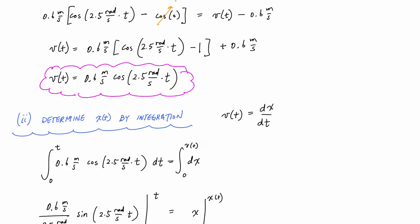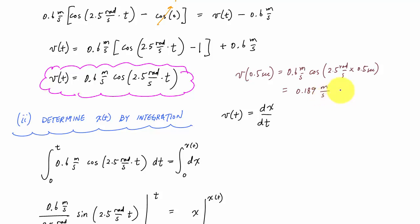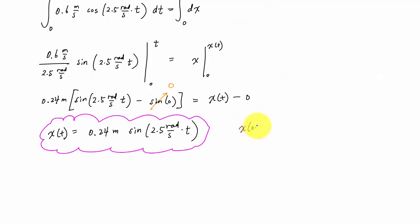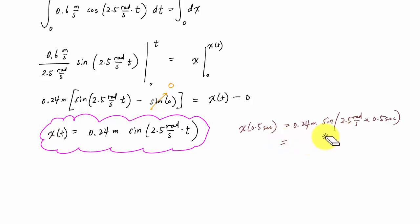Now I can plug and chug. To find the velocity at 0.5 seconds, I substitute t = 0.5 into the velocity function, which gives 0.18 meters per second. And for the position at 0.5 seconds, substituting into the position function gives 0.228 meters.